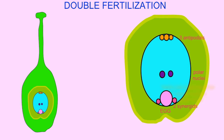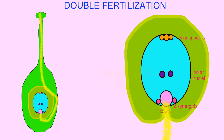When pollen grains land on the stigma, they will grow long pollen tubes through the style to reach the ovary and pass through the opening known as the micropyle. This pollen tube growth usually takes between hours and days, but in some cases may last a year.